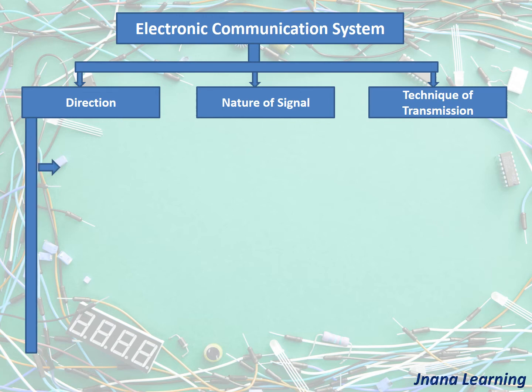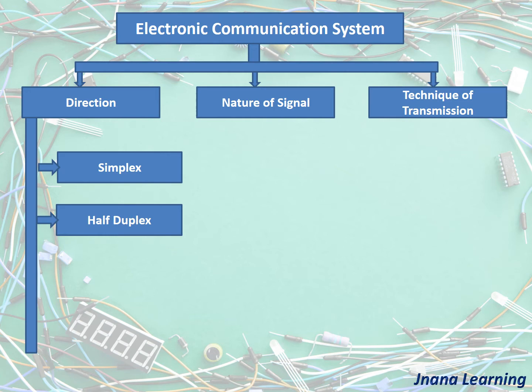Under direction-based classification, the first type is simplex, which is meant for bi-directional communication but the signal can only flow in one direction at a time. The next type is full duplex, where both ends of the communication can send and receive signals at the same time, and it is also meant for bi-directional communication.